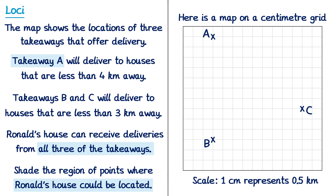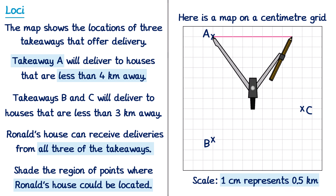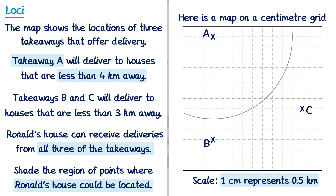For takeaway A, we know Ronald's house is less than 4km away. Looking at the scale: 1cm represents 0.5km, so measuring out increments of 0.5km each centimetre — 0.5, 1, 1.5, 2, 2.5, 3, 3.5, and finally 4km — gives us the radius. We take a pair of compasses and construct a circle around point A with this radius. Ronald's house is somewhere inside this circle.